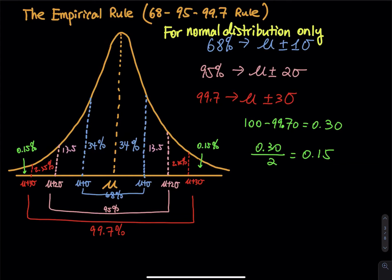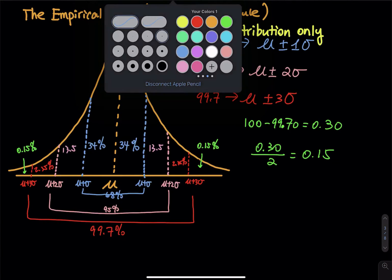The next one is 99.7%. You have mu right in the middle; you take three steps to the right and three steps to the left — that captures 99.7% of the area. Since this is only 99.7% and not 100%, we still have 0.3% remaining. Take 100 minus 99.7 = 0.3, divided by 2 = 0.15, so you have 0.15% leftover on each end. If you add up all the pieces you have 100%.